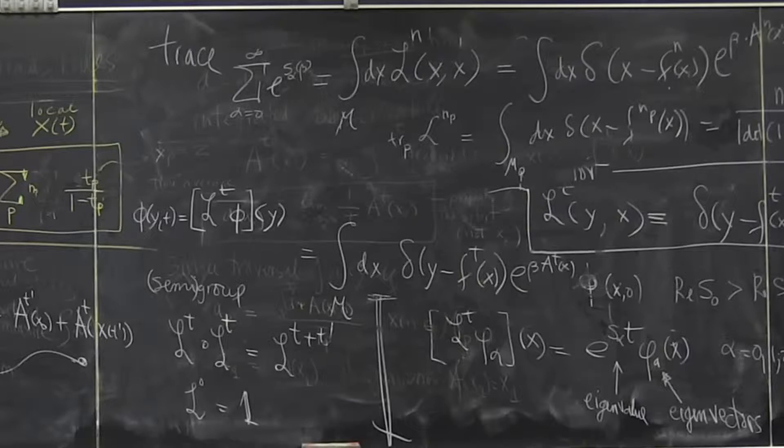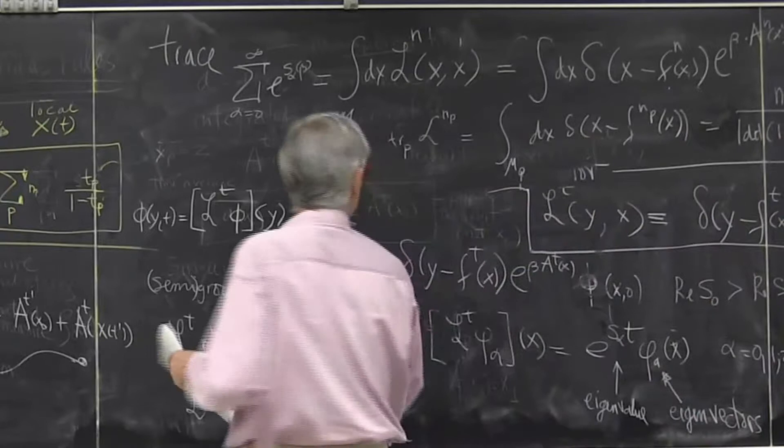And then in d dimensions, you get the d dimension thing because you're computing this in the original space, not function space, you have the original Jacobian, just the product of the eigenvalues, 1 minus P. These are Floquet multipliers of the orbit. There is d of them. So that's what any periodic point will contribute by integrating over the whole space.